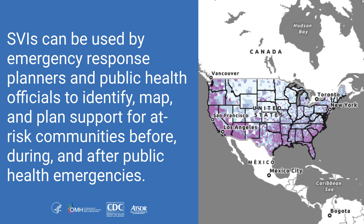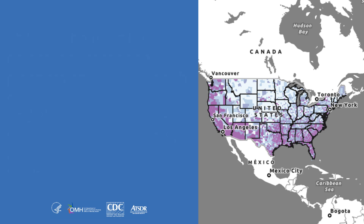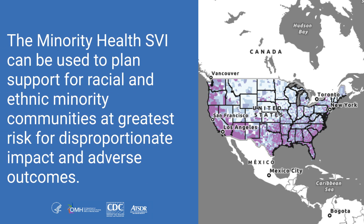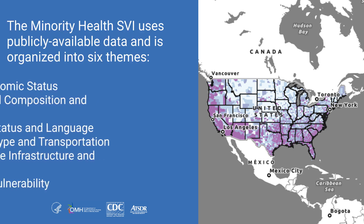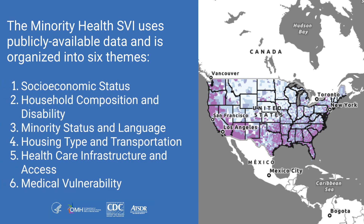The Minority Health Social Vulnerability Index is an extension of the CDC ATSDR Social Vulnerability Index, a database that helps emergency response planners and public health officials identify, map, and plan support for communities that will most likely need assistance before, during, and after a public health emergency. It supports the identification of racial and ethnic minority communities at greatest risk for disproportionate impact and adverse outcomes due to the COVID-19 pandemic and other public health emergencies. It uses data from the U.S. Census and other publicly available sources.